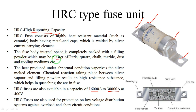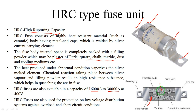The filling powder material may be plaster of paris, quartz, chalk, marble dust, or other cooling mediums. The heat produced under abnormal operating conditions vaporizes the silver fuse element. A chemical reaction occurs between the silver fuse element and the coating powder, resulting in high resistance which helps to quench the arc in the fuse. This causes it to melt and open the circuit.